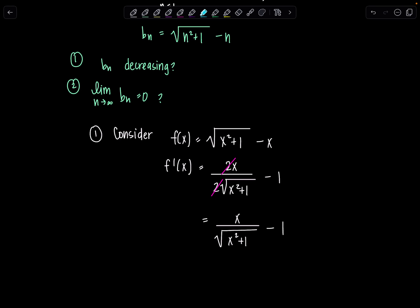x over rad x squared plus 1, that's always less than 1. How am I making such a bold claim? x squared plus 1 is strictly greater than x squared, and assuming everything's positive, which I know it is because these x's only go from 1 to infinity, then the square root of x squared plus 1 is greater than the square root of x squared, which is just x. So x over square root of x squared plus 1 is less than 1, and if I subtract 1, this is negative.